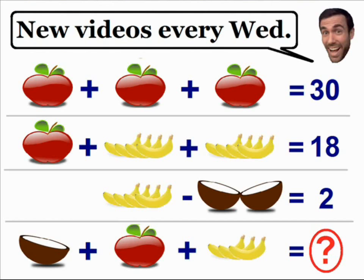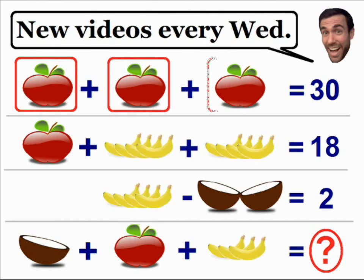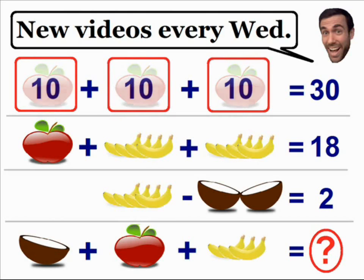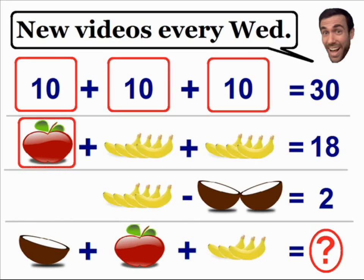Let's get started with our first equation. Here we have three apples being added together which have a value of 30, which means that one apple must have a value of 10 in order to make this equation true. If you look at our second equation, we also have an apple, and we know the value of an apple is 10, so we can plug in a 10 into the apple of our second equation.